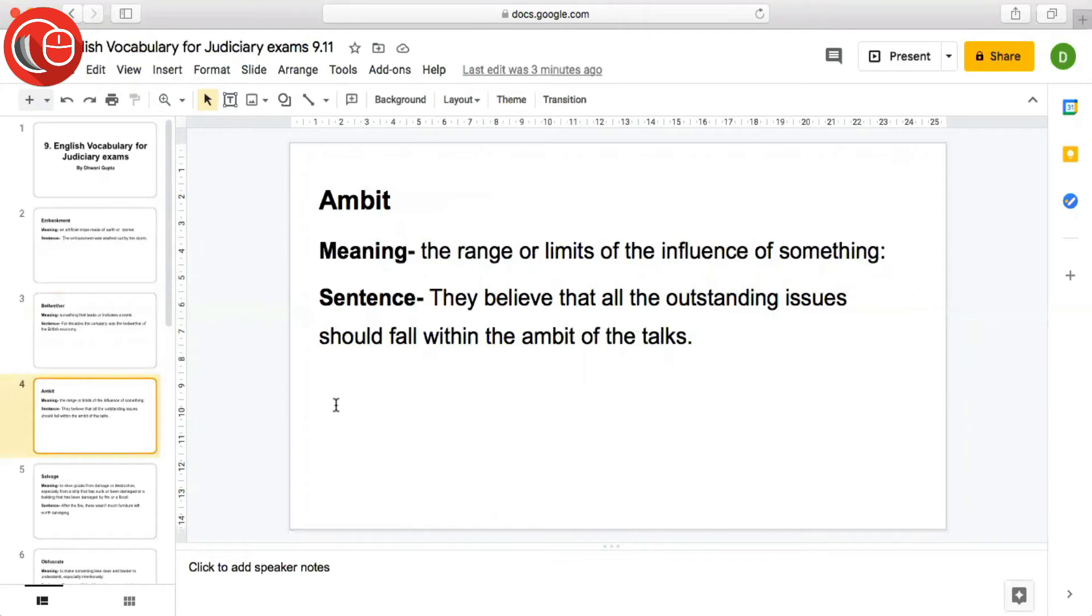The next word is ambit, meaning the range or limit of the influence of something. Kisi cheez ki jo limit hoti hai ya range hoti hai usse bolte hain ambit. Sentence: They believe that all the outstanding issues should fall within the ambit of the talks. It will fall within the range of the talks.